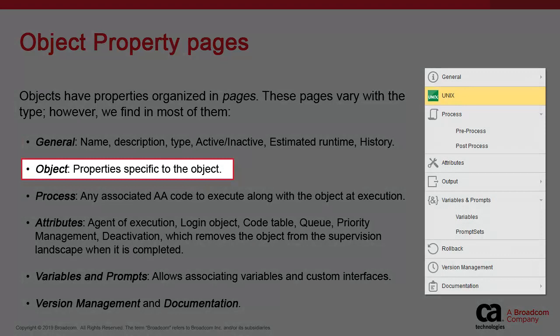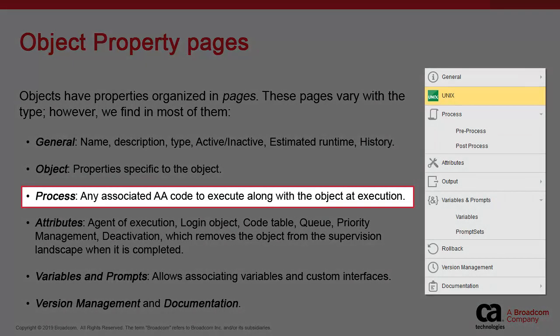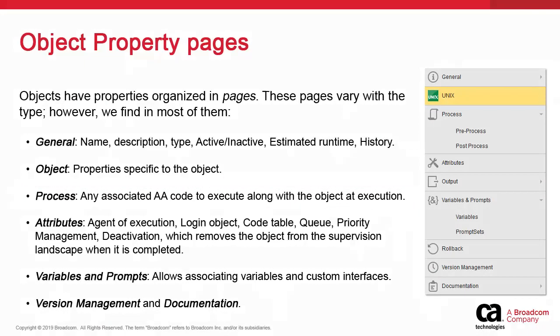The UNIX page tells you that this is a UNIX job. Here you'll be able to define where you want to store the job's report, either in the AA database or in the agent's file system. In the Process page, you can add any sort of code as long as it can be interpreted by the operating system or application, which includes AA's proprietary scripting language.